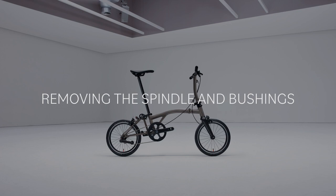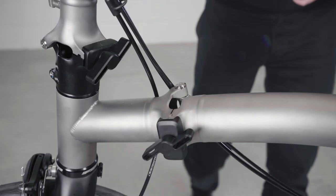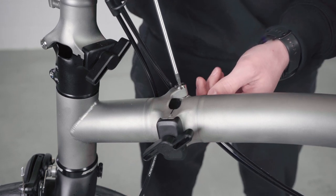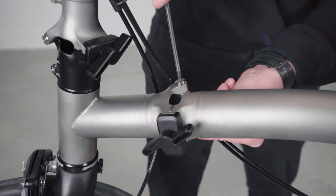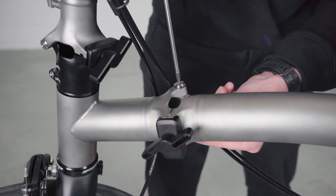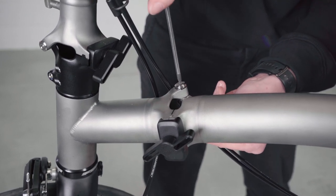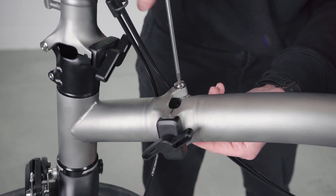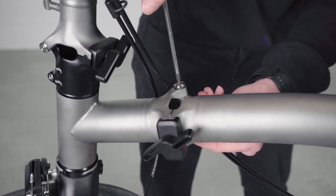Removing the spindle and bushes. Separate the hinge assembly. Unscrew the hinge spindle nut using a T15 Torx key. Hold the bottom nut to help drive the spindle upwards. This will help on removal.